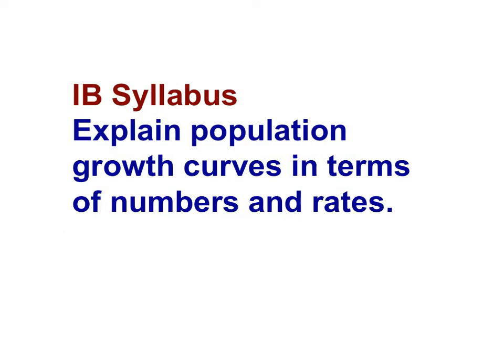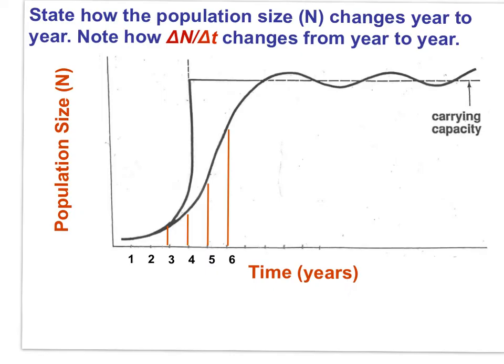The IB syllabus statement here is: explain population growth curves in terms of numbers and rates. In this slide I'm focused on describing the nature of exponential growth along the logistic curve. Notice how the population gets larger each year, but more importantly, notice how the number of individuals added each year is increasing through the first six years. This is exponential growth — the change in N, delta N, over the time period is increasing with each year.